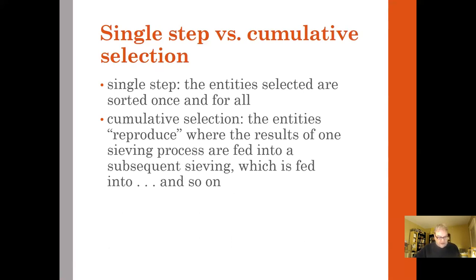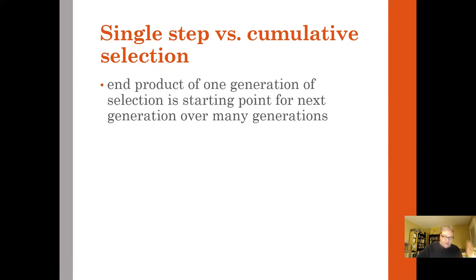What you need is a cumulative selection where the entities reproduce where the results of one sieving process are fed into a subsequent sieving, which is fed into another sieving process, and so on. Then the end product of one generation of selection is the starting point for the next generation of selection over many generations. And this is how he gets the program that he puts in place to bring about through random generation of letters on this typewriter, typing into a computer, where when he hits the right answer, it keeps the right answer there. So it keeps generating random letters, and when it hits the right letter, it keeps it there. And so then it doesn't take very long at all to get the whole sentence that way.